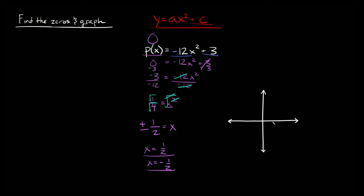So 1 half and negative 1 half — that's about here and here on the graph. We also need the vertex or y-intercept, which is at positive 3. Whenever the parabola is in this form you can find the vertex just using the number at the very end. So that's 1, 2, 3 on the y-axis, and then we can draw this parabola.